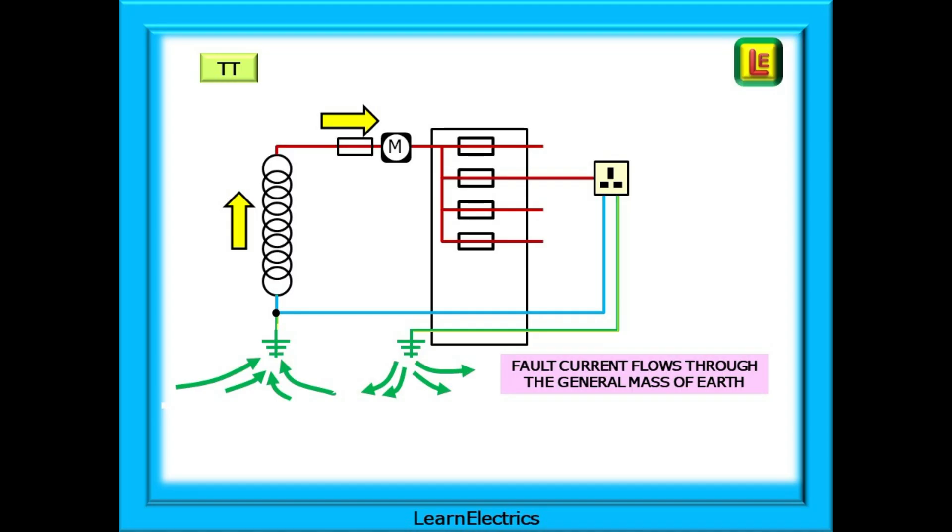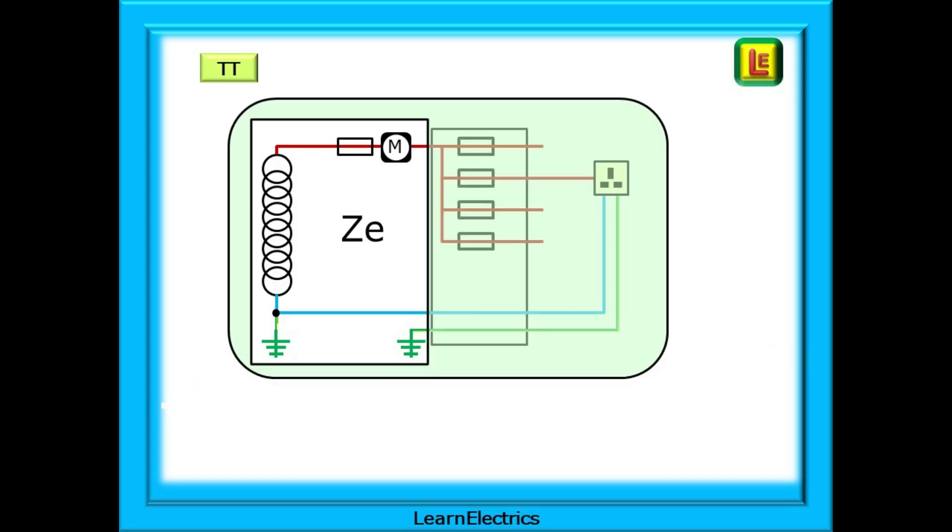And this is always the difficulty with TT systems. Because the current flow into the Earth is low and slow, it is often impossible to get enough fault current flowing to make overcurrent protective devices operate, and this is covered in an earlier video. Again, the ZE part of the TT system is shown here. Similar, but be aware of the difference to the TNS and TNCS systems.